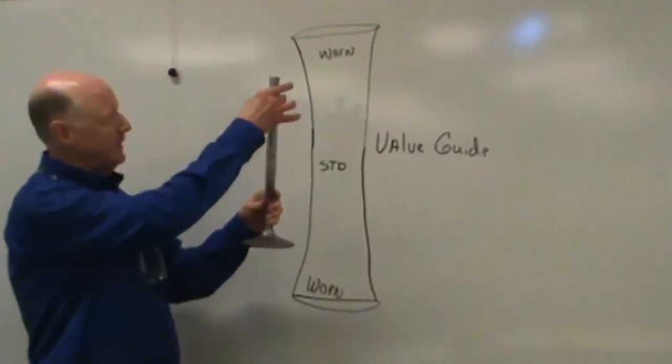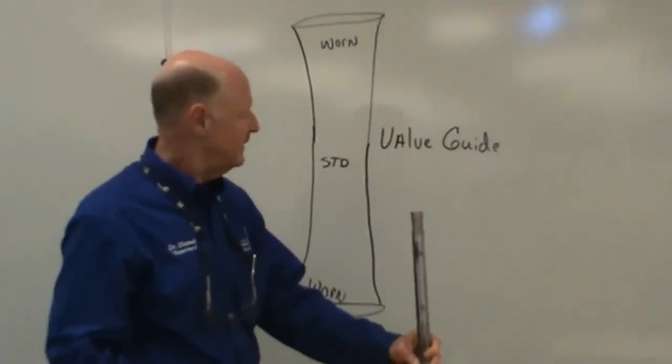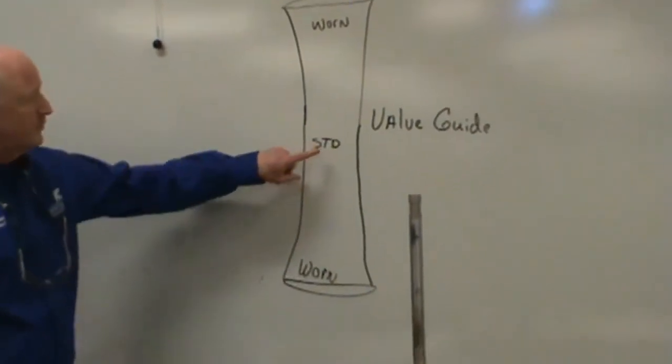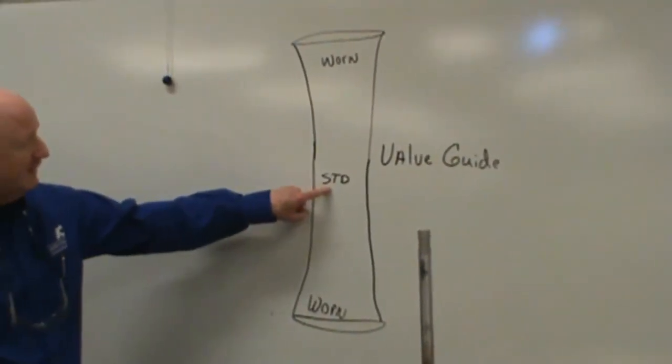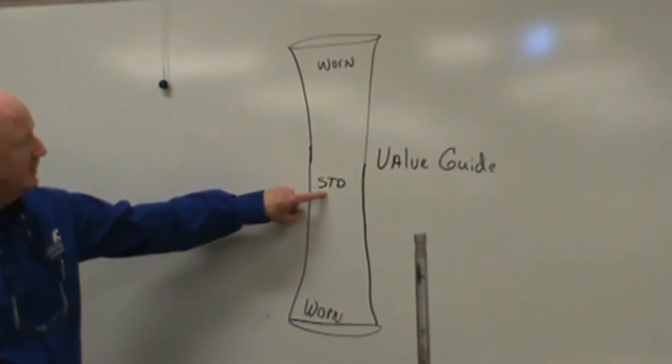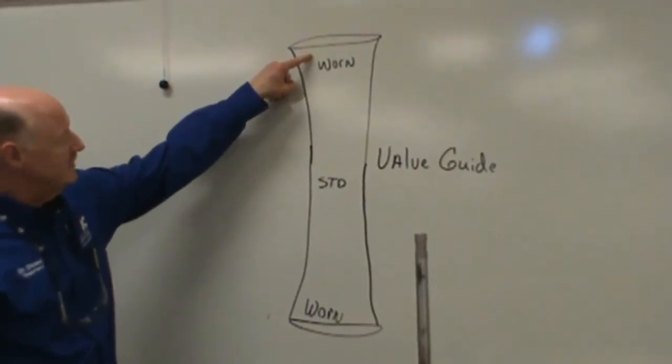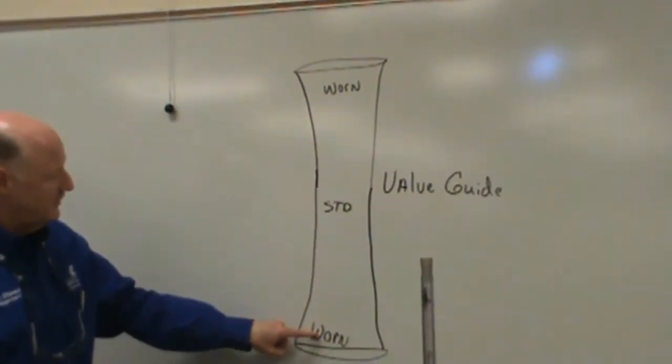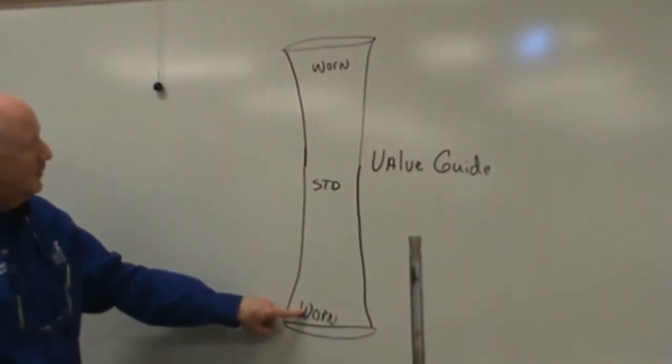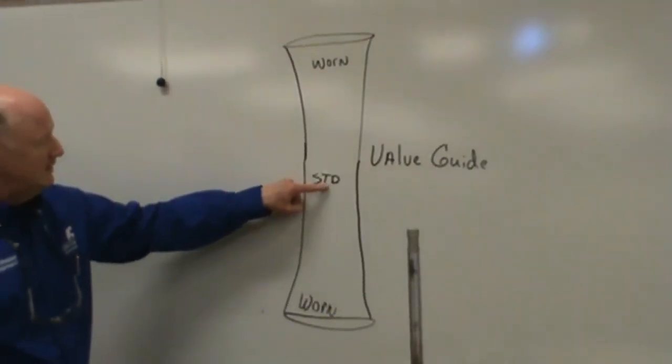So you're going to take three measurements with your micrometer, and these three measurements, this one's going to be like 375 thousandths or 371 thousandths, somewhere between those two ranges. This one may be 374, this one may be 374. So we would take our reading in the center,